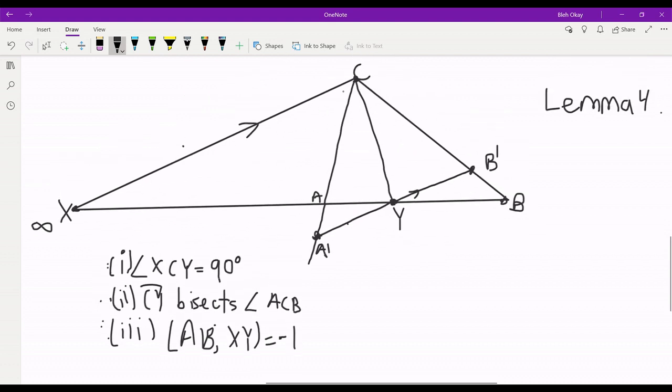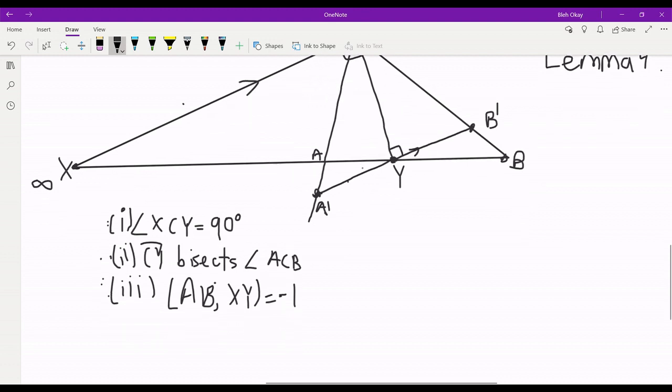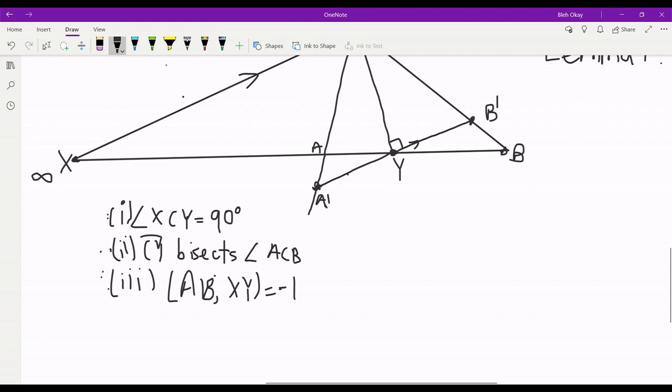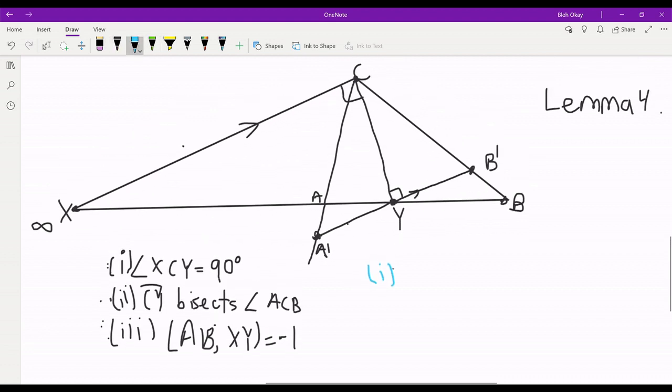So if angle XCY is equal to 90 degrees, then since these two lines are parallel as well, that means that this angle would also be 90 degrees. So I'll write this in blue. We can rewrite condition one as angle CYB prime is equal to 90 degrees.